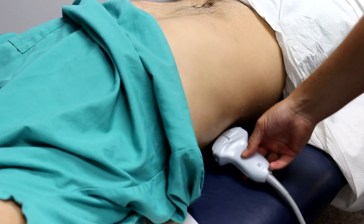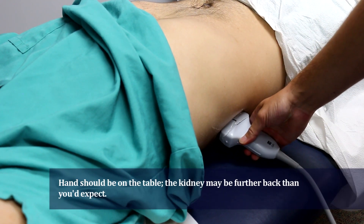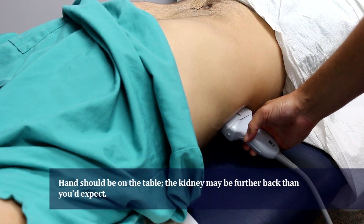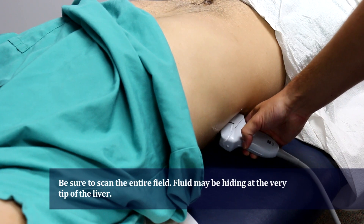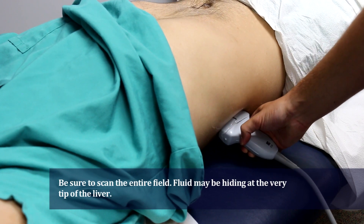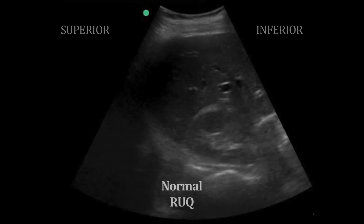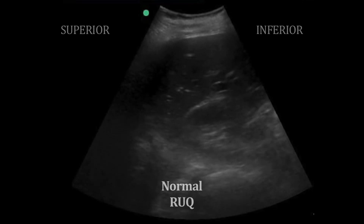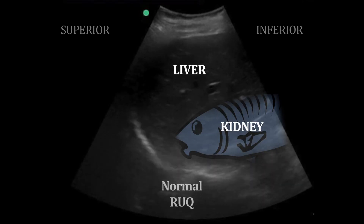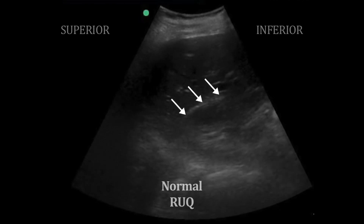For blunt trauma, the right upper quadrant is normally assessed first, as this is where fluid is most likely to accumulate. The right upper quadrant is home to the hepatorenal recess, a potential space that should normally be empty. Use the kidney as your landmark, which looks like a fish on ultrasound.